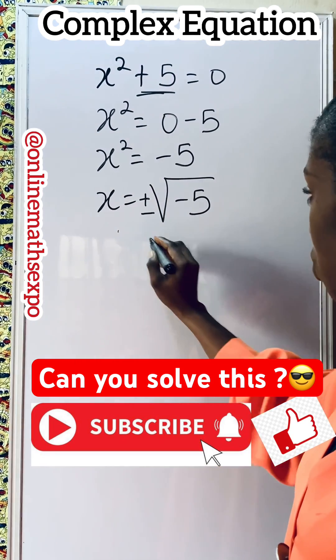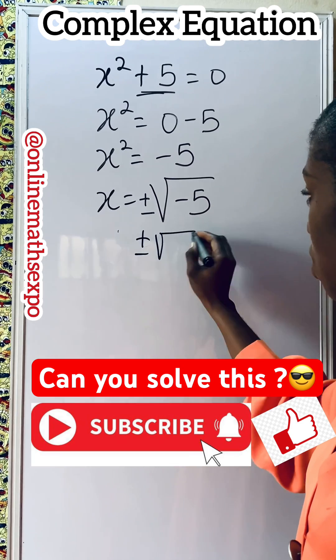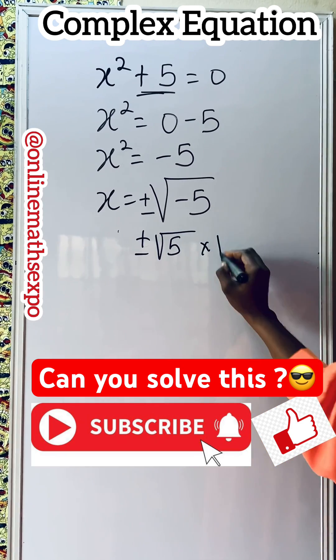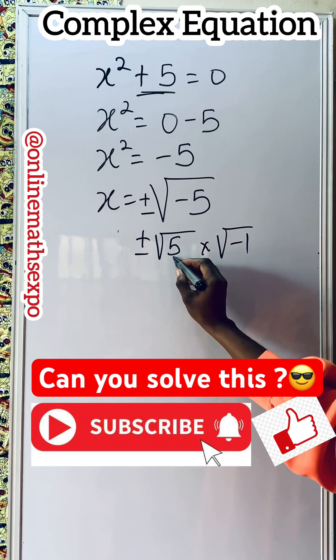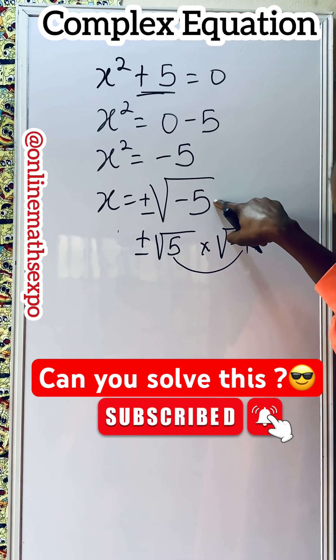So to simplify this, this can be rewritten as square root of 5 multiplied by square root of negative 1. If you multiply, it gives you back.